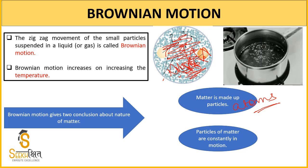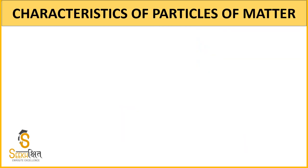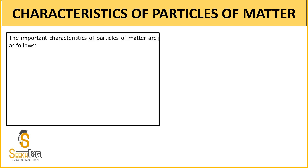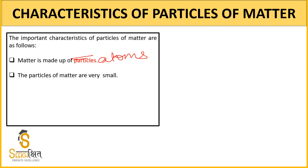Now let's talk about the characteristics of particles. First, matter is made up of particles. These particles are atoms of very minute size — they are so small that we cannot see them with the naked eye. To observe them, we use an electronic microscope.